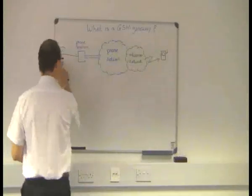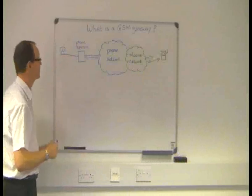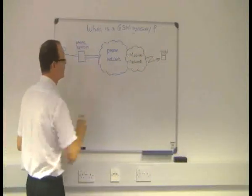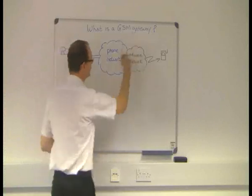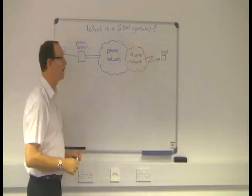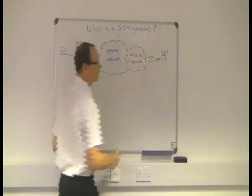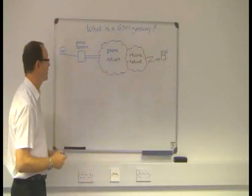So here we've got an extension connected to a business telephone system. And the telephone system is connected to the public telephone network. And part of that network is the mobile network where the call is connected away to the mobile handset.